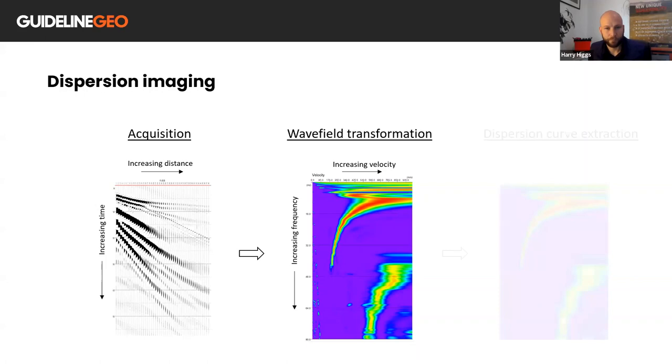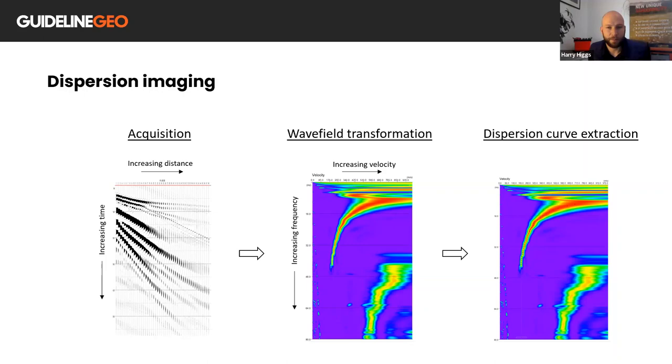It's then possible to extract the dispersion curve digitally by interpreting the highest amplitudes along the fundamental mode dispersion curve which is also known as the M0 curve. Note also that the higher modes may also be present and for accurate analysis it's useful if you can differentiate between those.